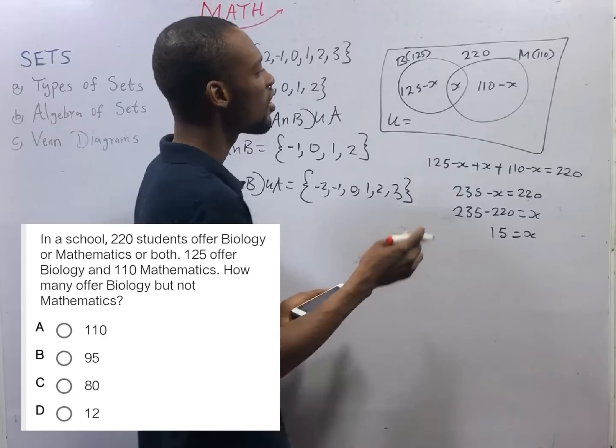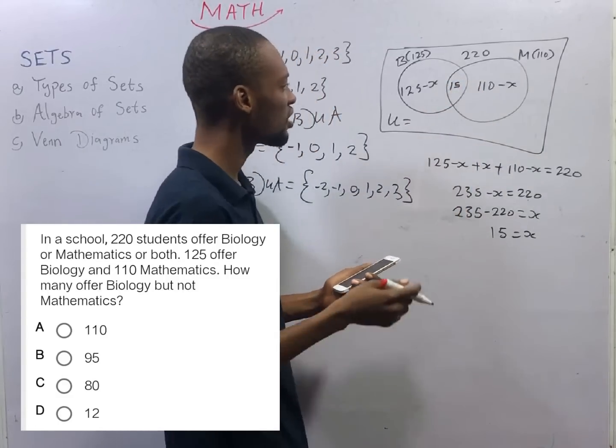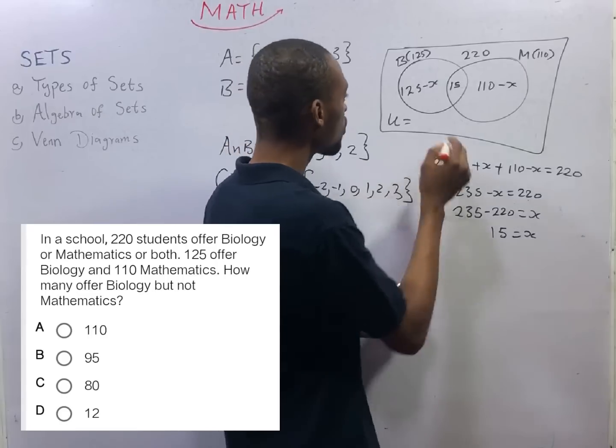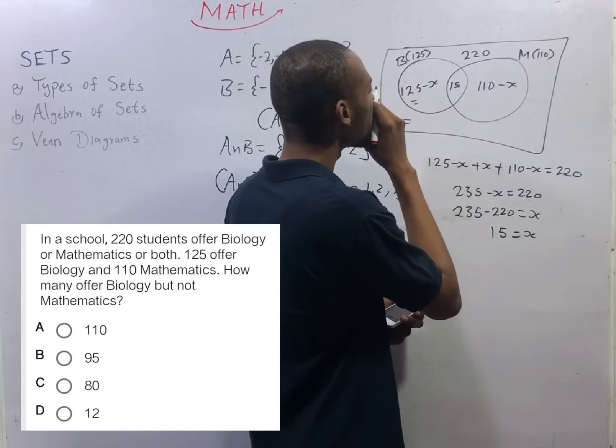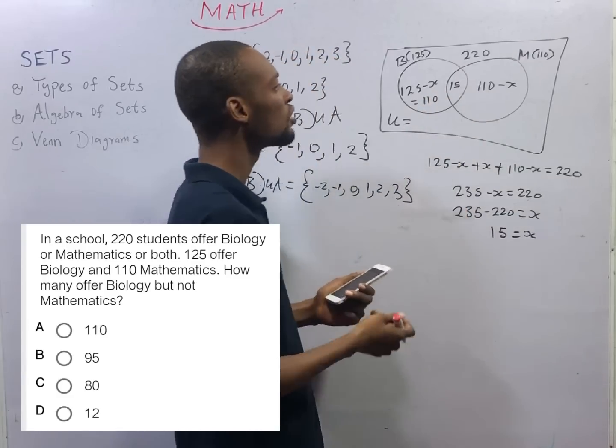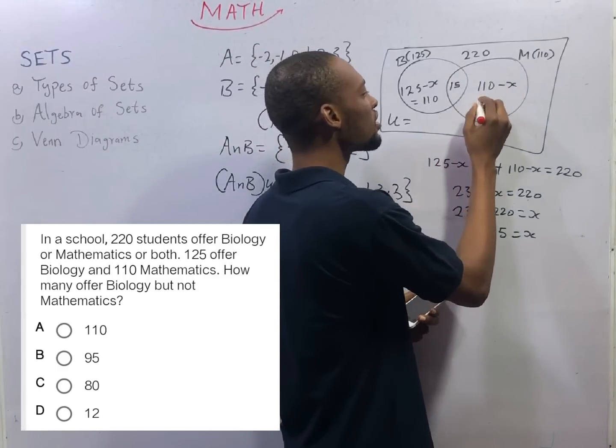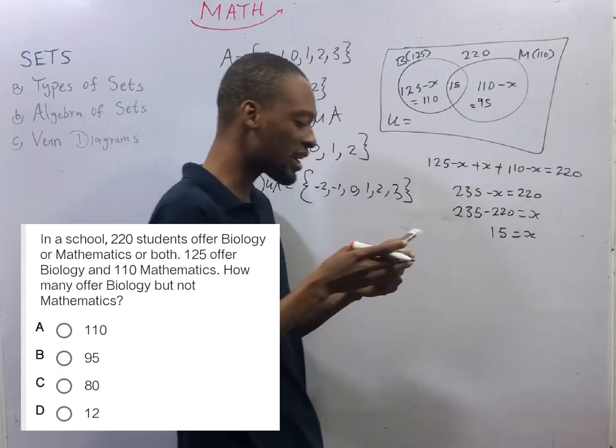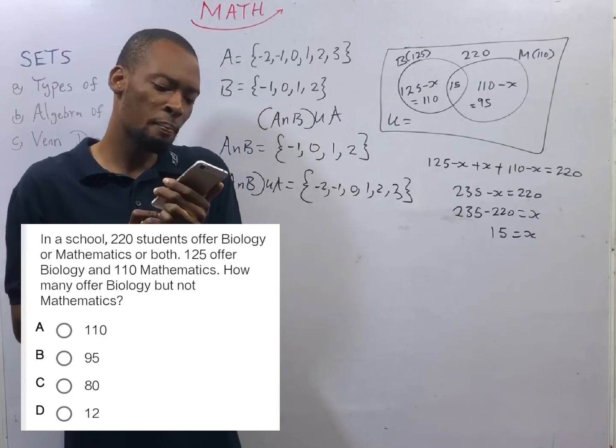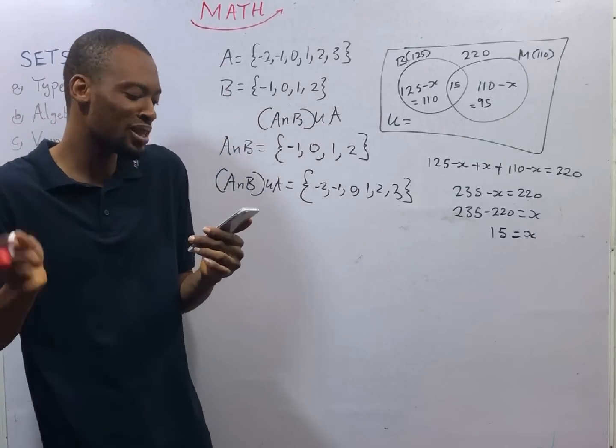So 15 offer both biology and mathematics. Those who offer only biology is equals 125 minus 15, that should give you 110. Those who offer only mathematics will simply be 110 minus 15, 95. That is if I am correct. So we are looking for those who offer biology only and not mathematics. No atom of mathematics. They are 110.